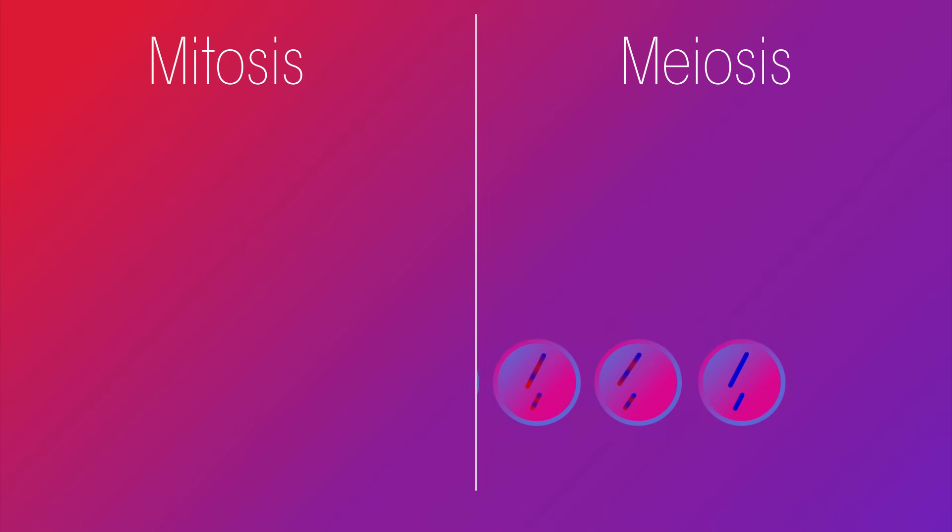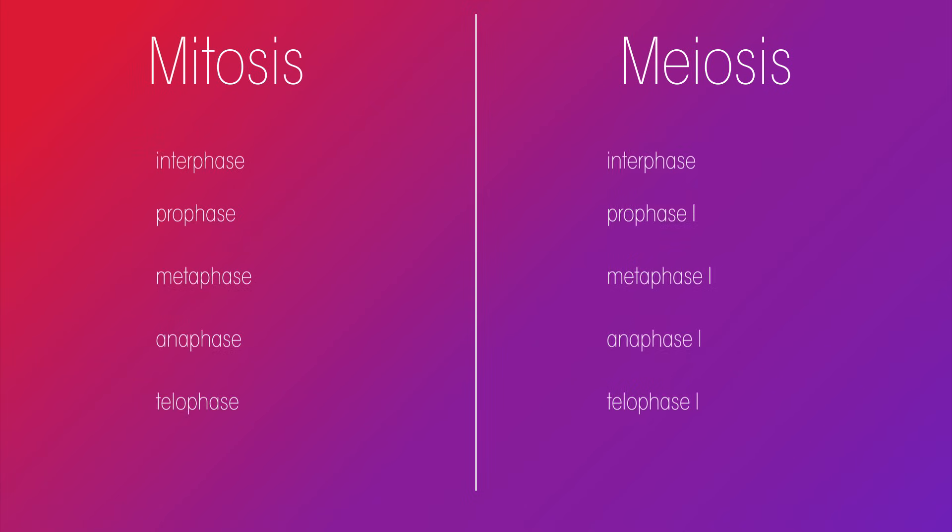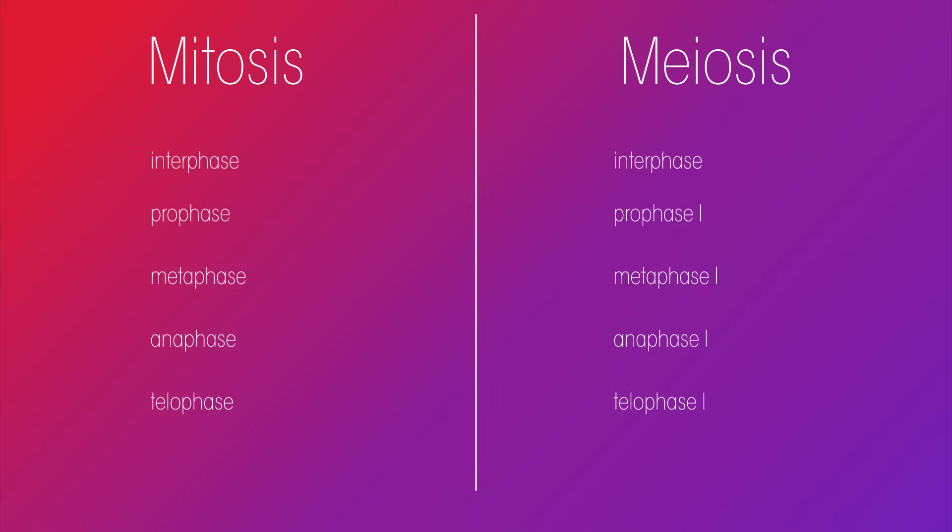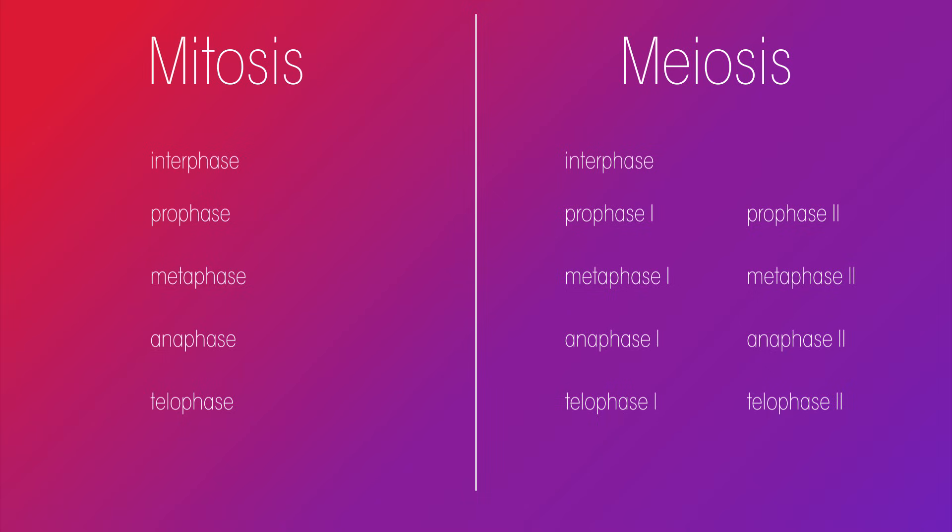Both mitosis and meiosis include the same phases: prophase, metaphase, anaphase, and telophase, except in meiosis they happen twice, so they're usually referred to as one and two. The easiest way to remember these phase names is to remember IPMAT.